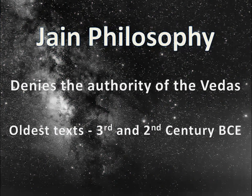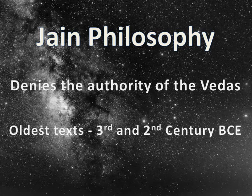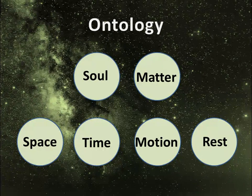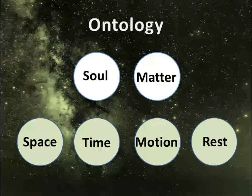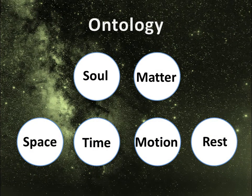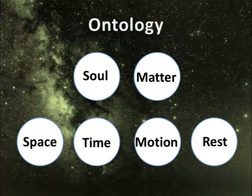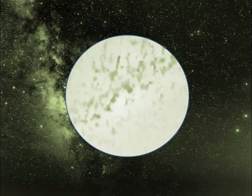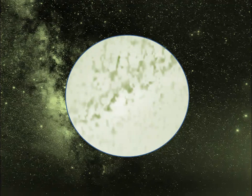Jain philosophy denies the authority of the Vedas, and for this reason is called heterodox. The oldest texts date from the 3rd and 2nd centuries BCE. There are six categories in the Jain ontology: soul is sentient and non-material; matter is non-sentient and material; space, time, motion, and rest are neither sentient nor material. In Jainism, the soul has infinite knowledge but is bound to the cycle of rebirths because of subtle particles of matter, called karma, that embed themselves within the soul.